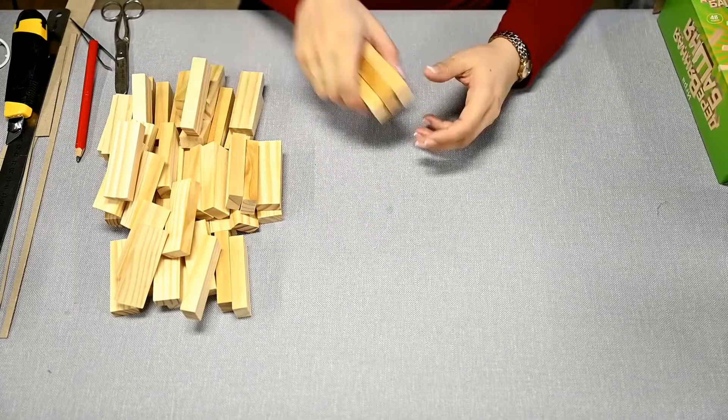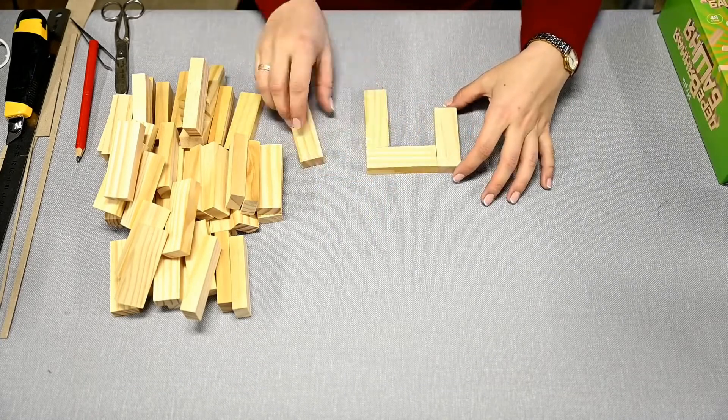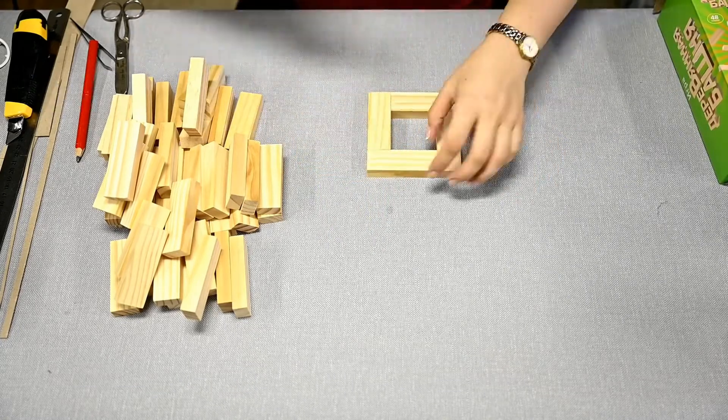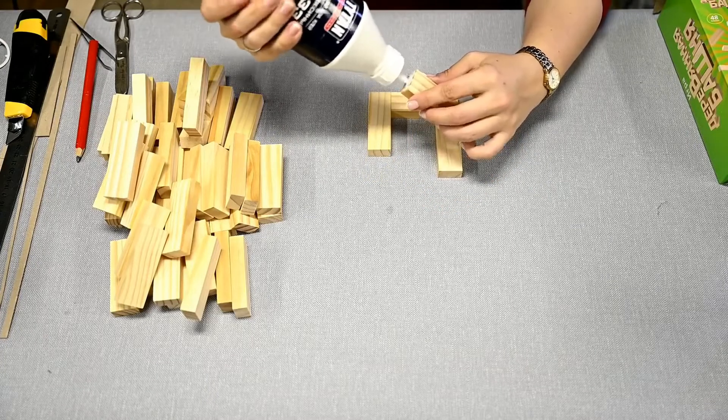So first I'm going to make an oriental lantern. First I'm making a square part out of blocks. Here I'm using wood glue.